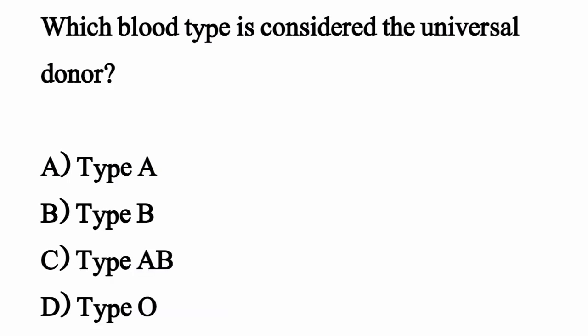Which blood type is considered the universal donor? The correct option is option D: Type O blood group.